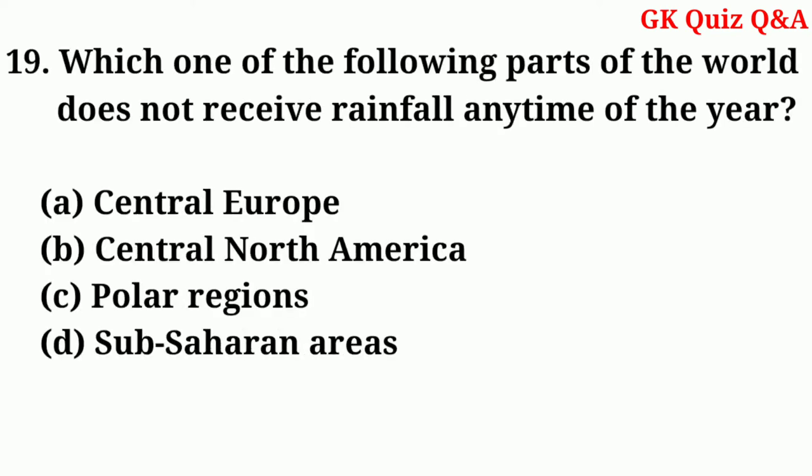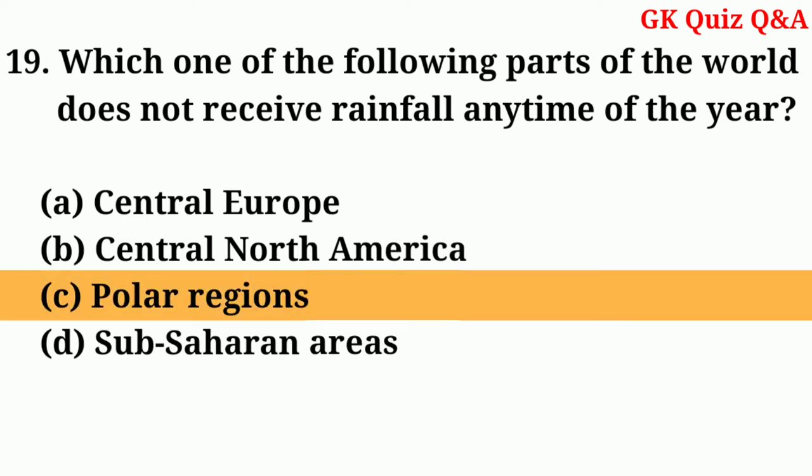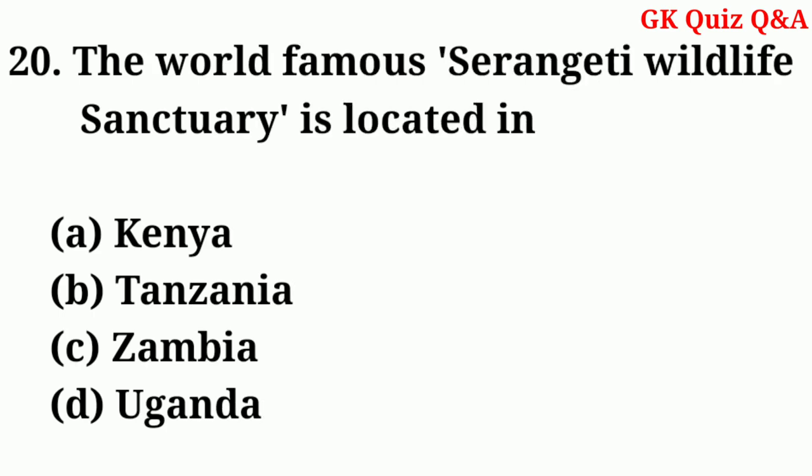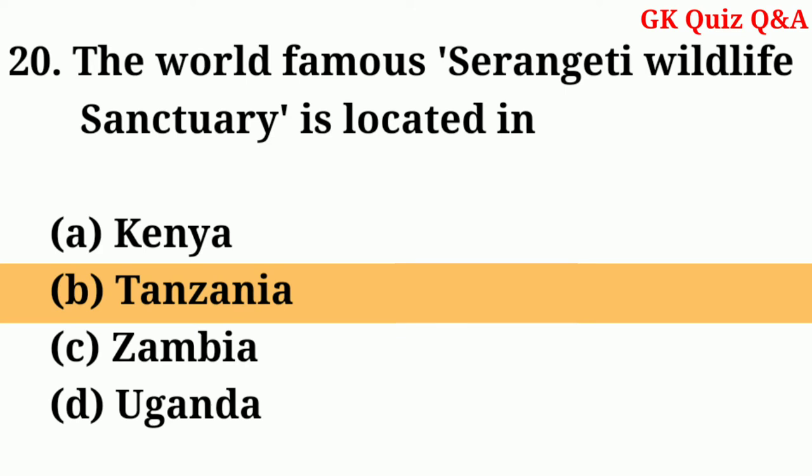Which one of the following parts of the world does not receive rainfall any time of the year? Answer: C — Polar regions. The world-famous Serengeti wildlife sanctuary is located in? Answer: B — Tanzania.